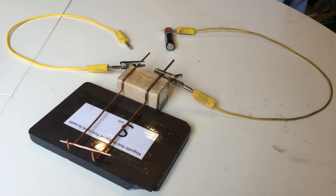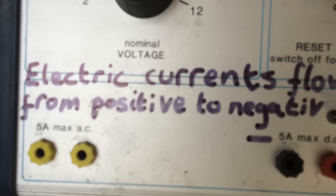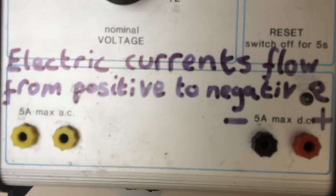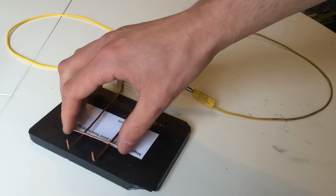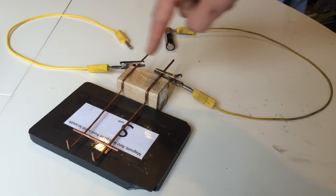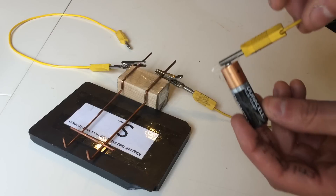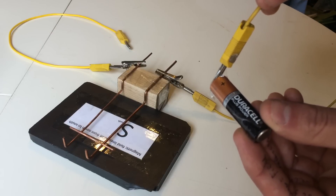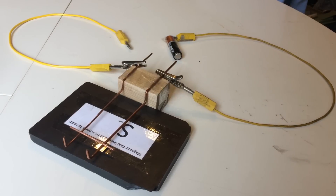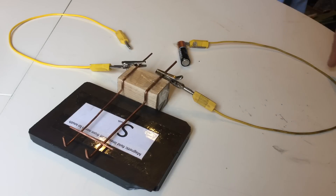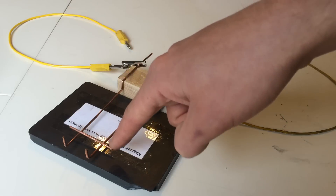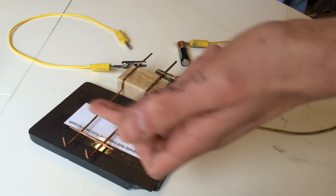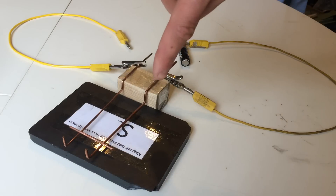The second important convention is about the direction of electric current — in physics, electric currents flow from positive to negative. This conductor bridges the gap between two conductors. Tracing back to the battery, I've taped the wire to the positive terminal. The current flows from positive along this wire, down here, so the current through the conductor is moving in this direction.